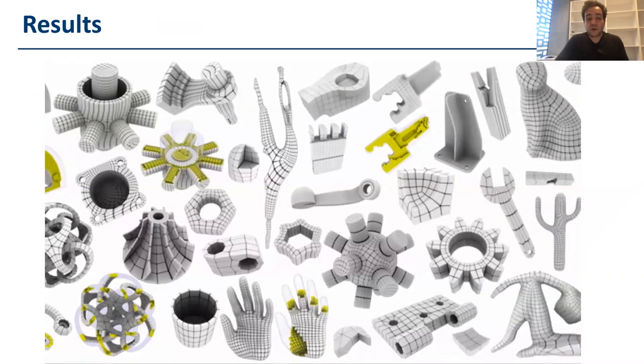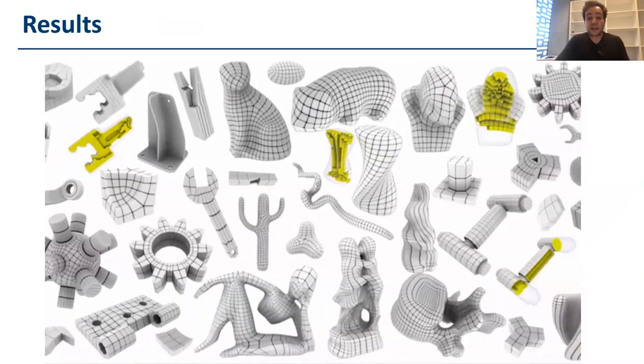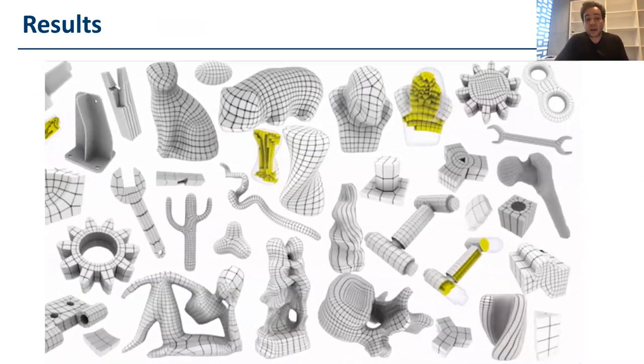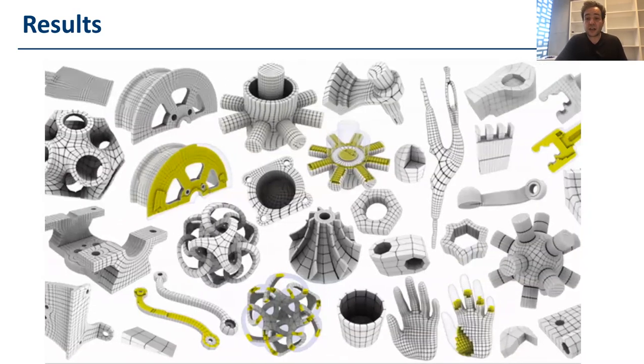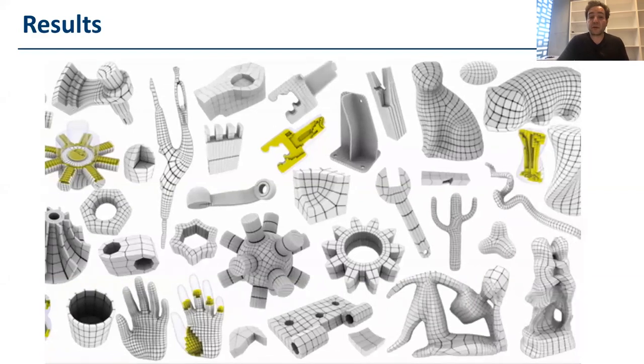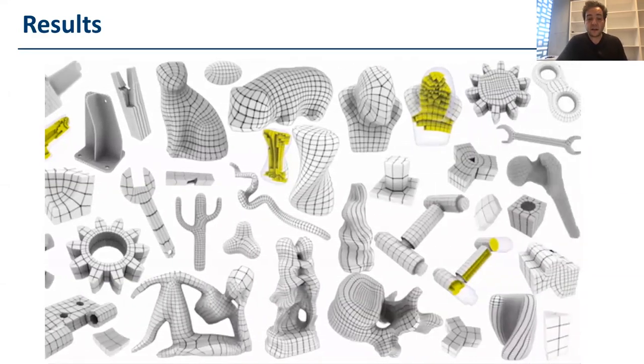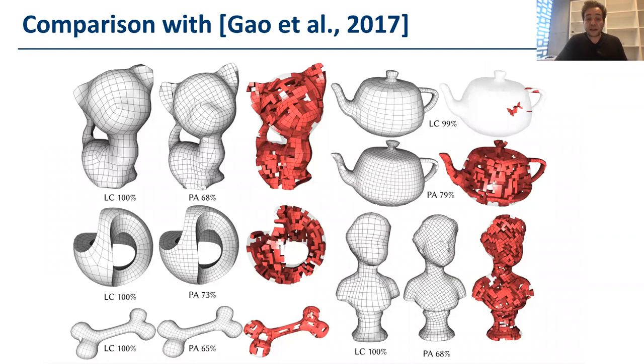So, we tested our algorithm on a substantially big dataset made of about 80 shapes, and the shapes are both organic and mechanical.